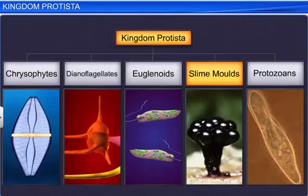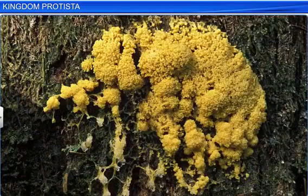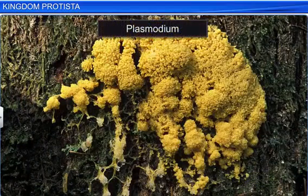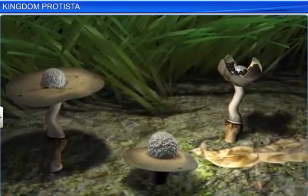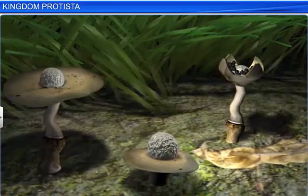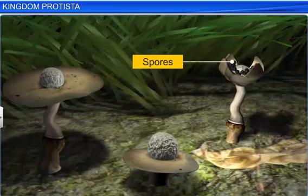Slime molds are saprophytic protists, that is, they live on dead organic matter. They form a huge aggregation called plasmodium. However, during unfavorable conditions, this plasmodium differentiates and forms spores that possess true walls. These spores are so resistant that they can survive for years under adverse conditions.